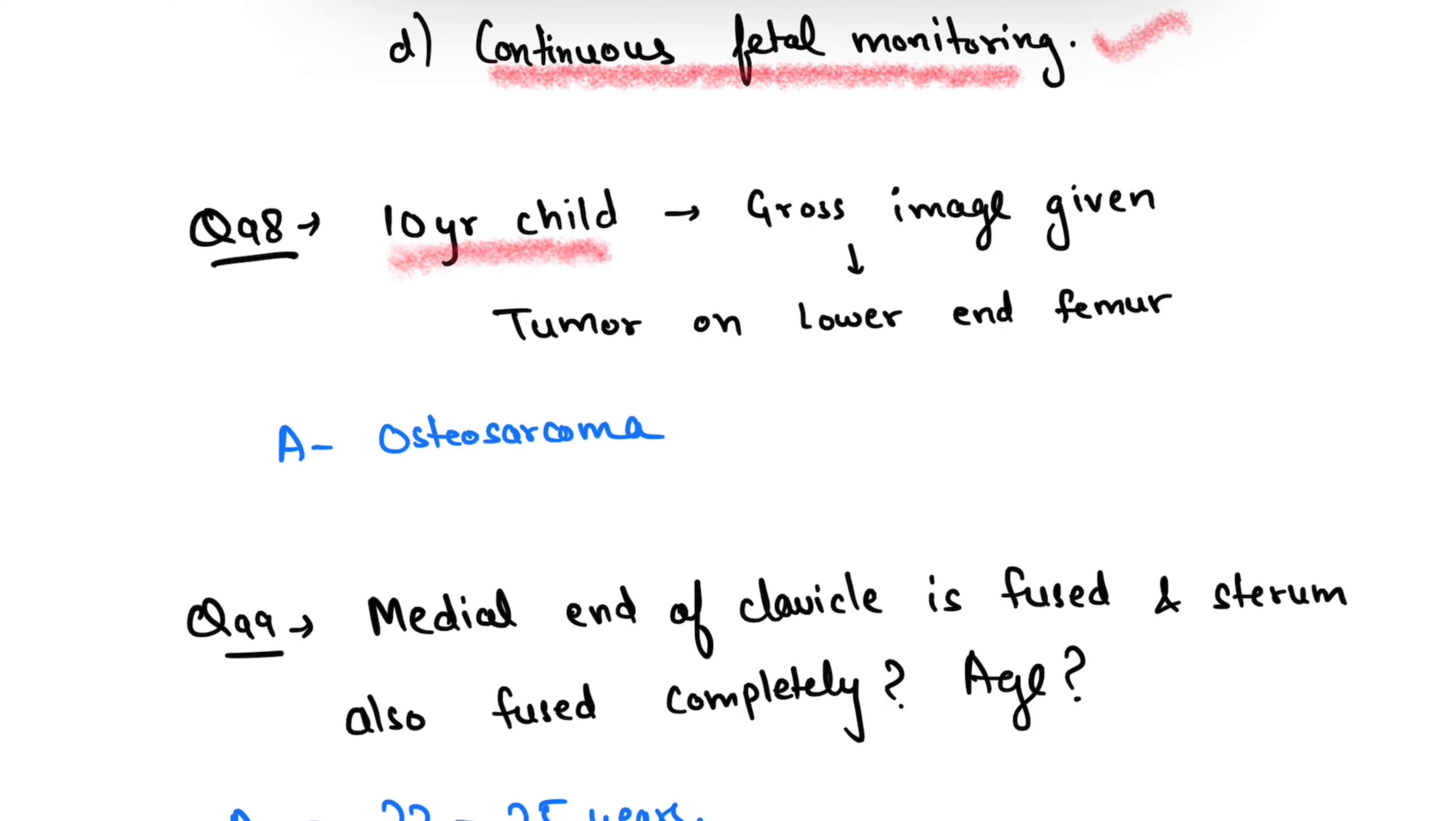Question 98: 10-year-old child, history was given and a gross image was shown in which tumor on lower end of femur was shown. The answer should be osteosarcoma.